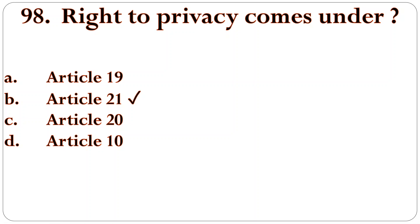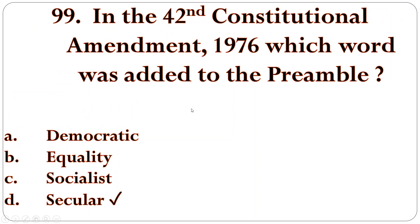Next question: right to privacy comes under Article 21. Very, very popular question. Next question: in the 42nd Constitutional Amendment 1976, which word was added to the preamble? The answer is 'Secular'. Secular is the right answer.